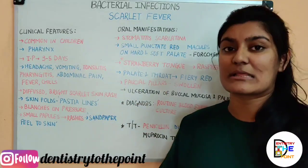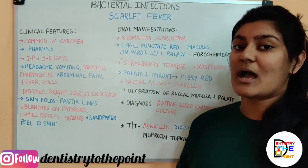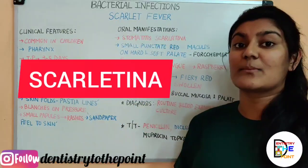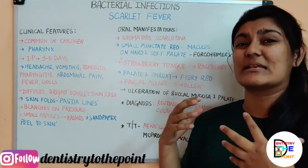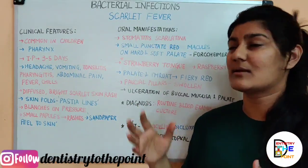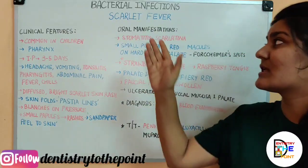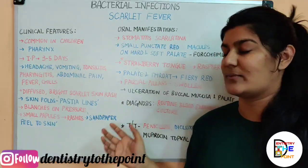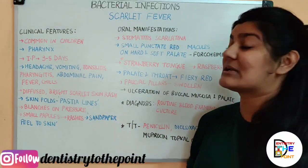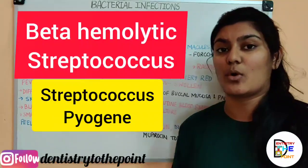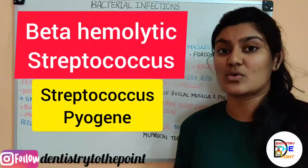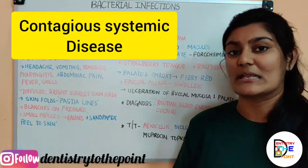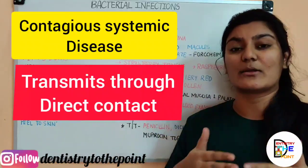The first topic we are going to discuss is scarlet fever. Scarlet fever is also known as scarlatina, and the word scarlet represents a deep, bright red colour. Scarlet fever is caused by beta-hemolytic Streptococcus pyogenes, and it is a contagious systemic disease. Contagious means it spreads through direct contact.